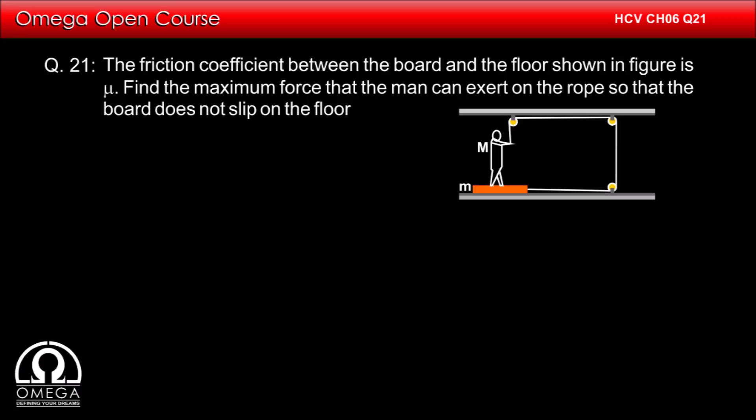The friction coefficient between the board and the floor shown in the figure is mu. Find the maximum force that the man can exert on the rope so that the board does not slip on the floor.